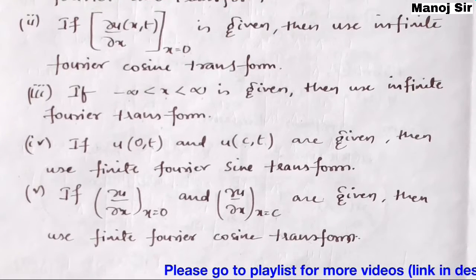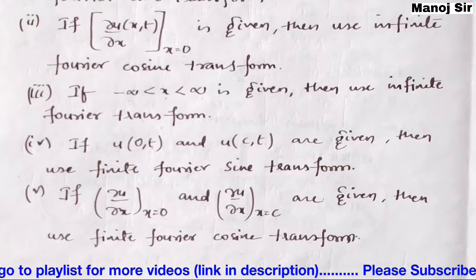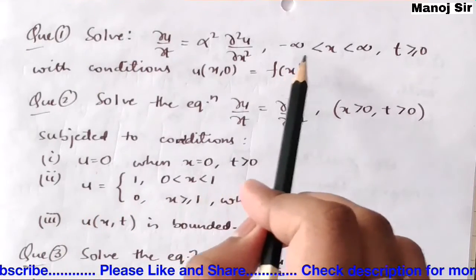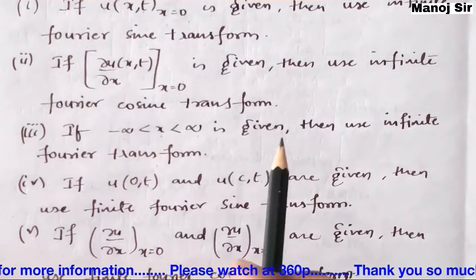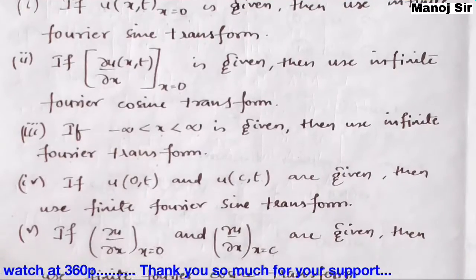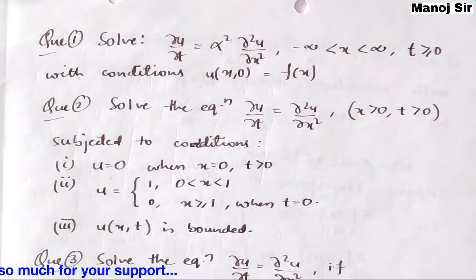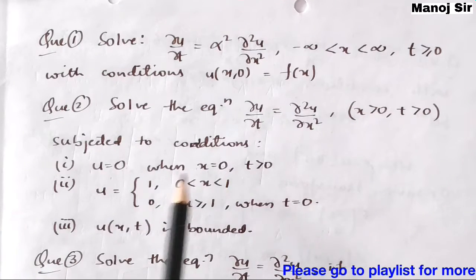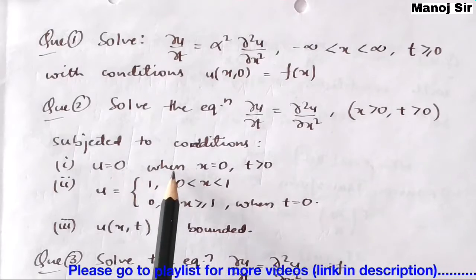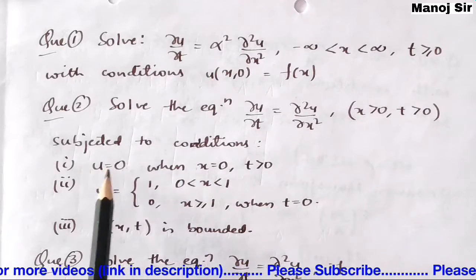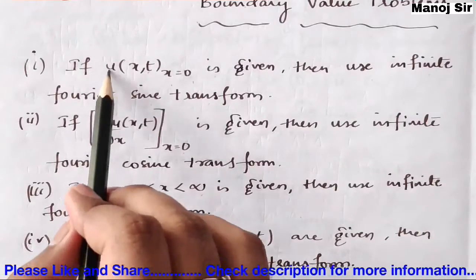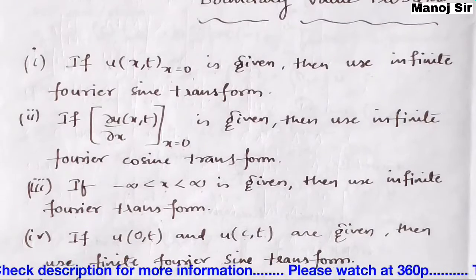Now let us see the problems we are going to solve. In the first problem, the limit of x is from minus infinity to plus infinity, so we use the infinite Fourier transform. In the second problem, the value of u is given at x = 0, so we are going to use the infinite Fourier sine transform.